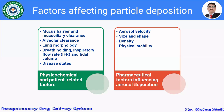In the case of physico-chemical and patient-related factors, we are going to discuss the mucous barrier and mucociliary clearance, alveolar clearance, lung morphology, breath holding, inspiratory flow rate (IFR), tidal volume, and the disease state. In the case of pharmaceutical factors, we will discuss aerosol viscosity, size and shape, density, and physical stability. These are the factors which affect particle deposition into the lung airway.